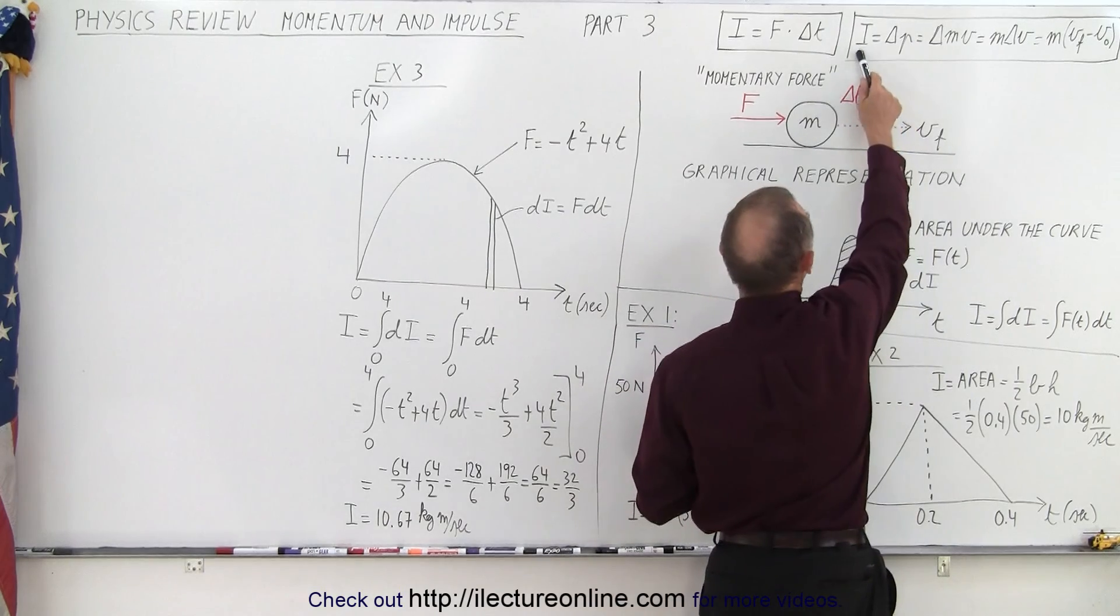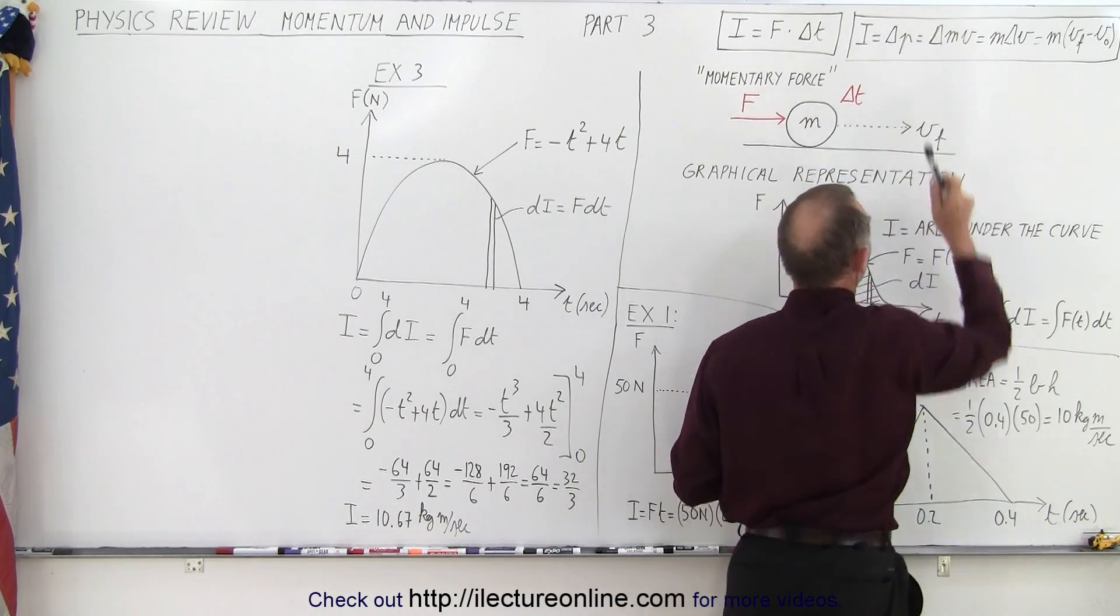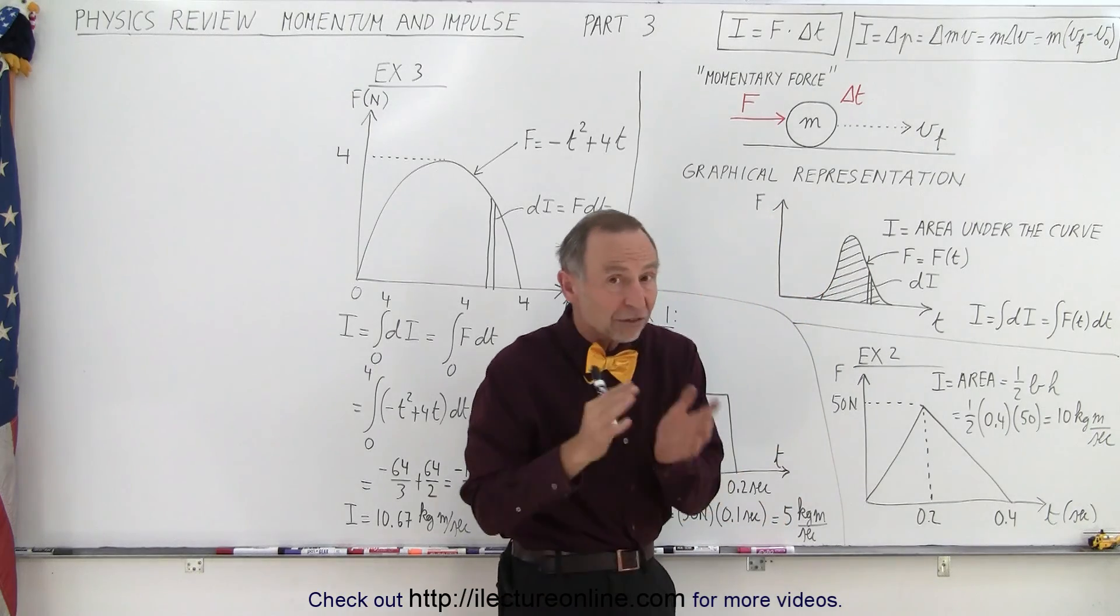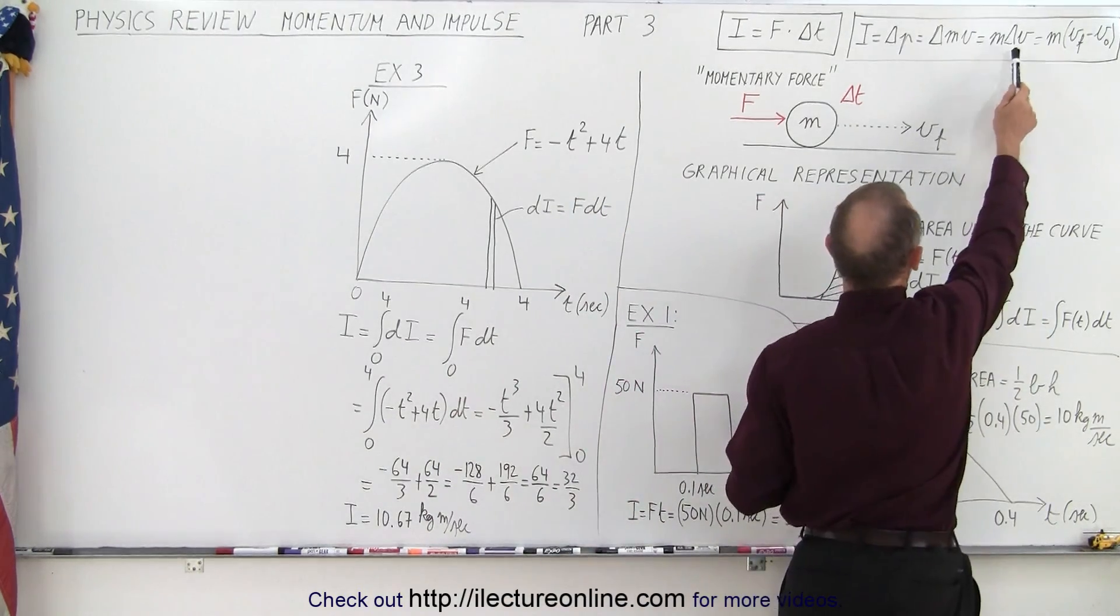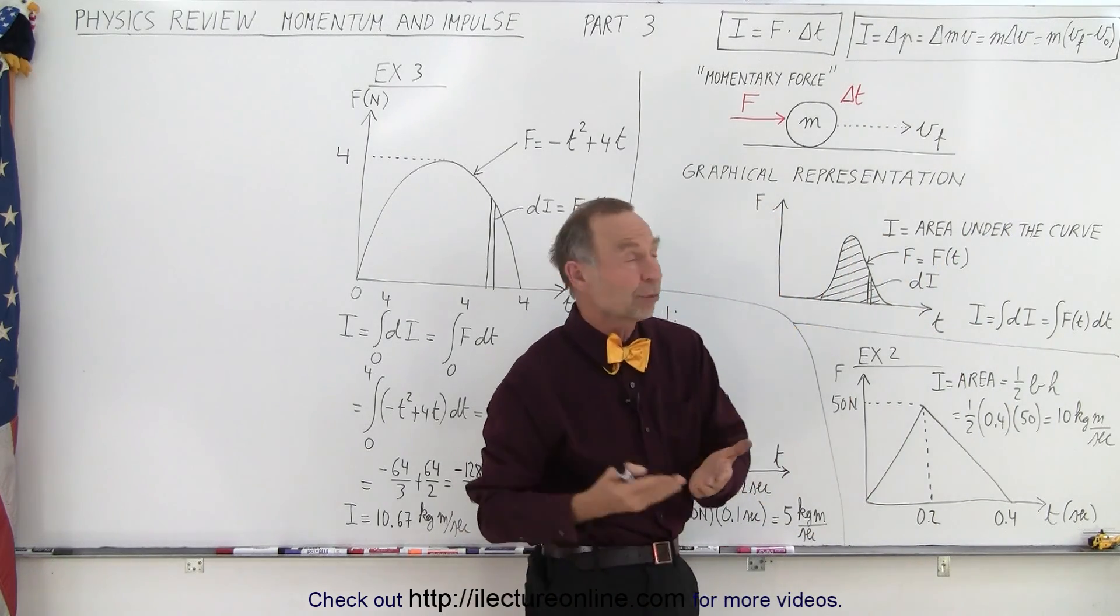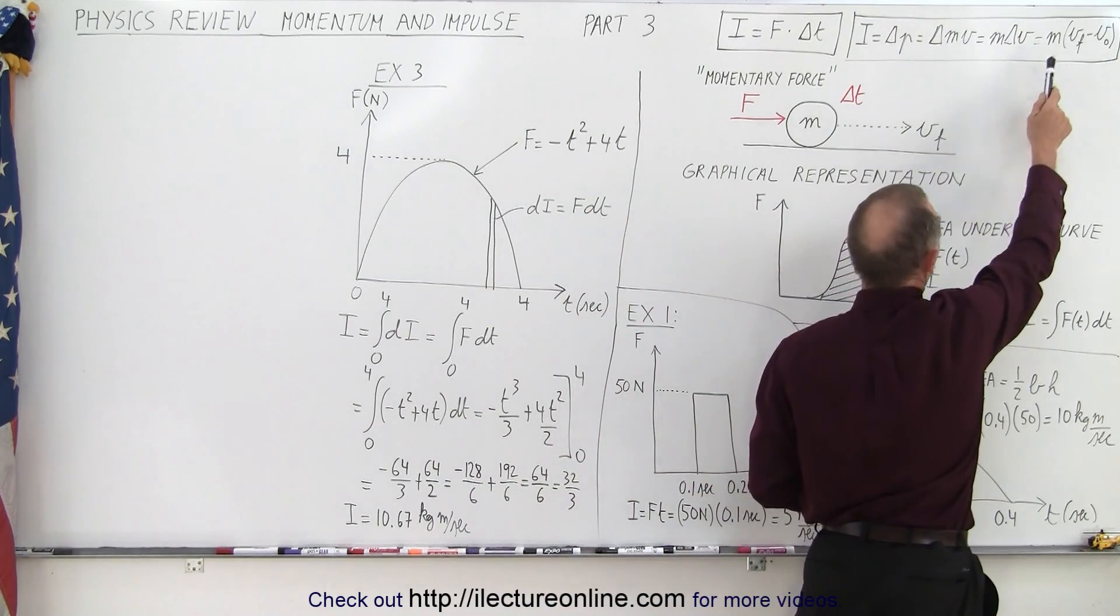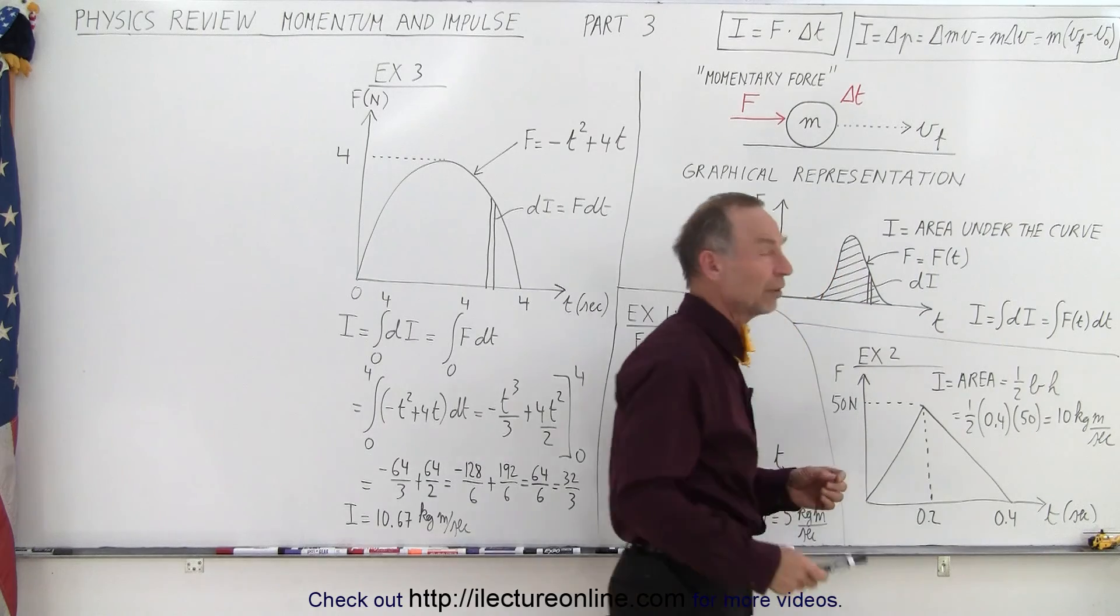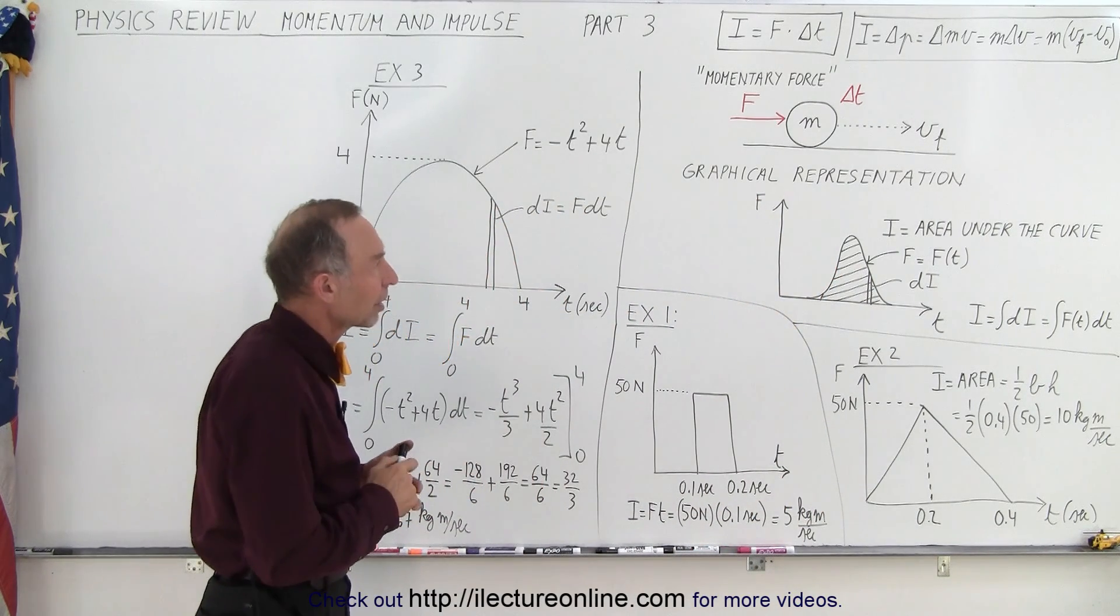So when we try to define impulse in terms of change in momentum, notice that momentum is defined as mass times velocity. And typically the mass doesn't change, only the velocity changes. So it's equal to the mass times a change in velocity. And of course the change in velocity can be expressed in terms of v final minus v initial. So impulse can also be expressed as the mass times the final velocity minus the initial velocity. And we often utilize that particular concept.